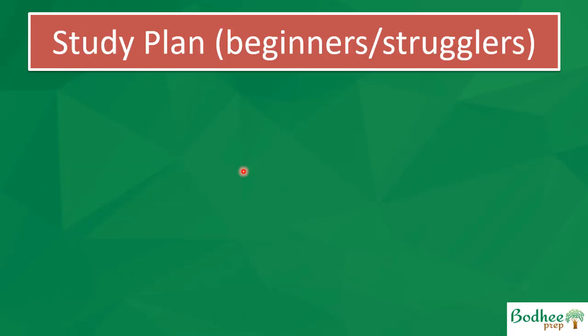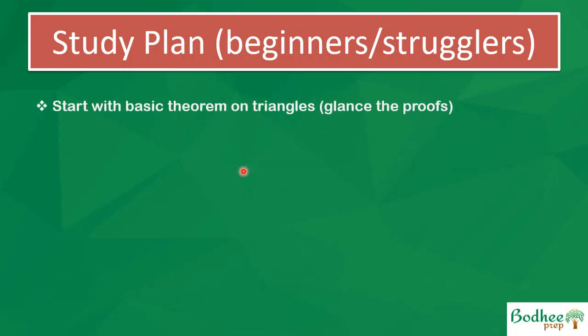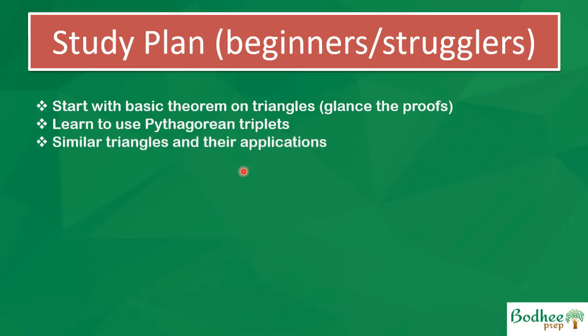Now for the study plan for geometry: many feel geometry is an ocean, so where and how to start is a big challenge. Start with the basic theorems on triangles — what is a triangle, different properties and types, how to find area, heights, and so on. Try to differentiate properties from each other so you can apply them while solving questions. Use Pythagorean triplets — very important. Learn about similar triangles and their applications.